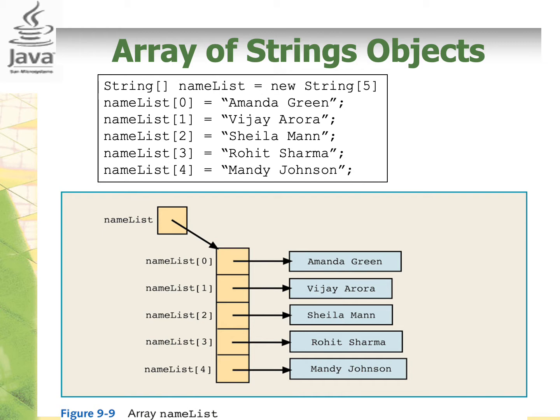What about string? String is an object. Creating an array of string, meaning an object of string, is basically creating an array object that contains string objects. What does that really mean? So if we do System.out.println and then the name of the array, it will give a some value, which is the reference to it.